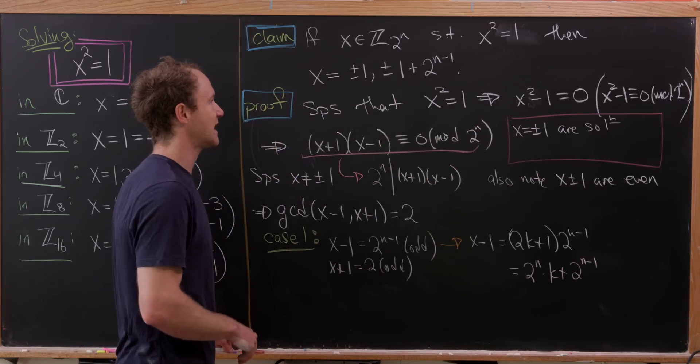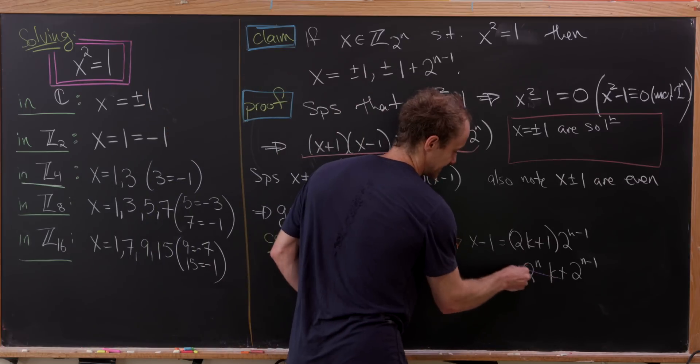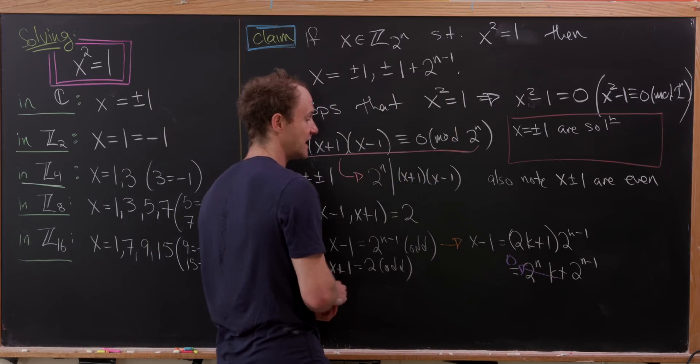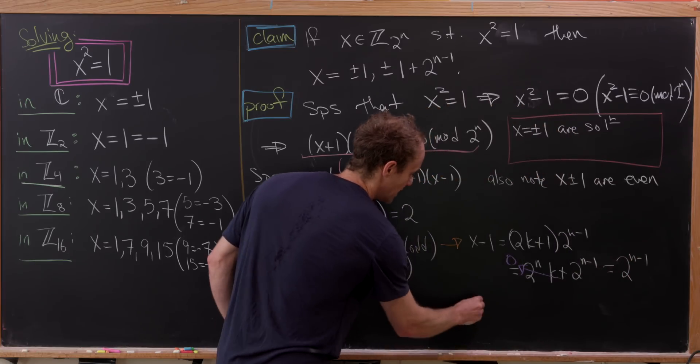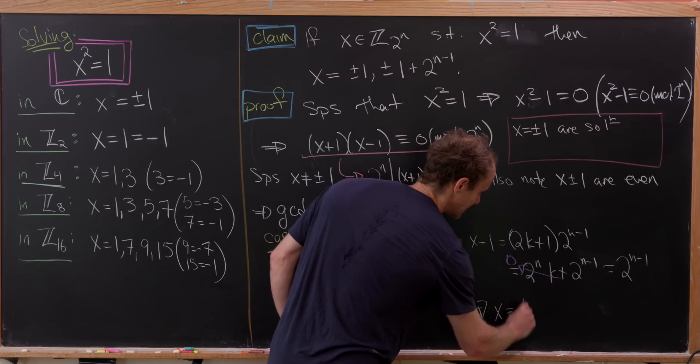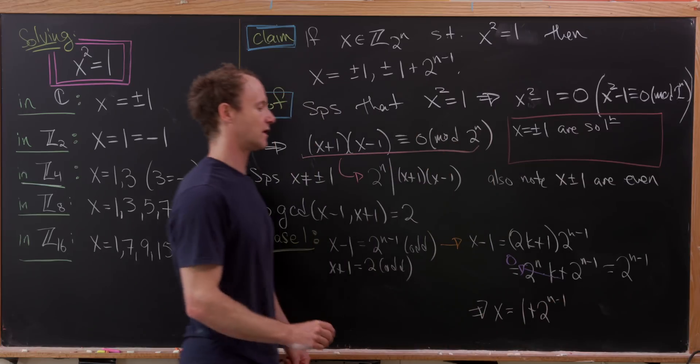But 2ⁿ in ℤ₂ⁿ is 0 by definition. And so that means we get x-1 = 2ⁿ⁻¹ from which we see that x = 1 + 2ⁿ⁻¹.